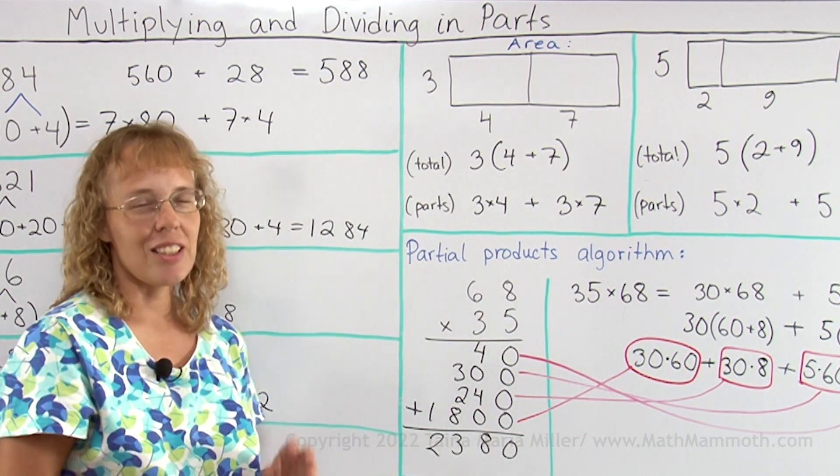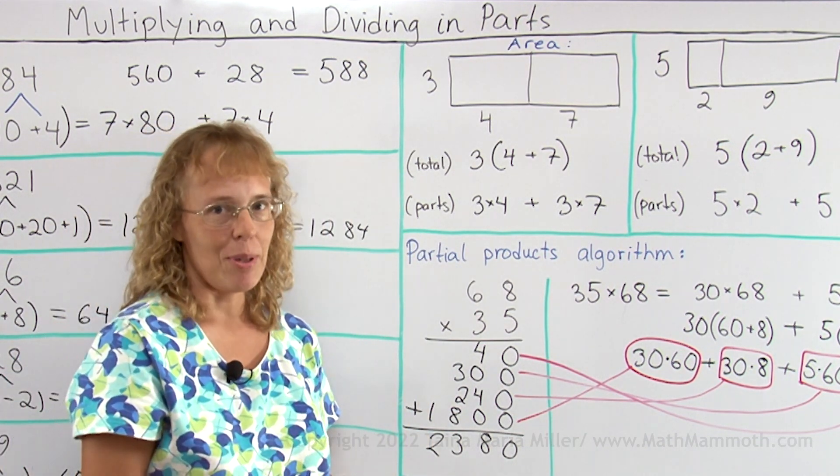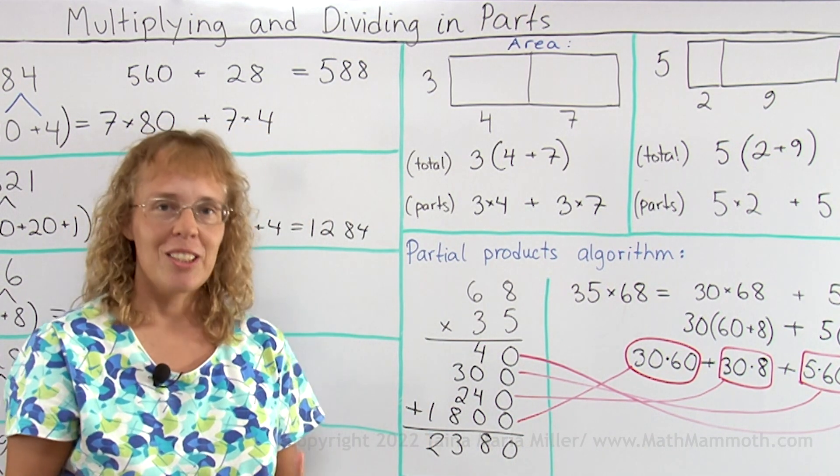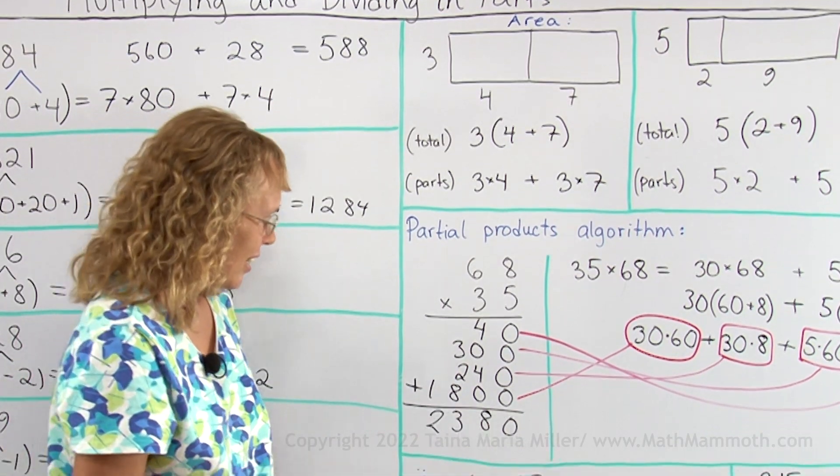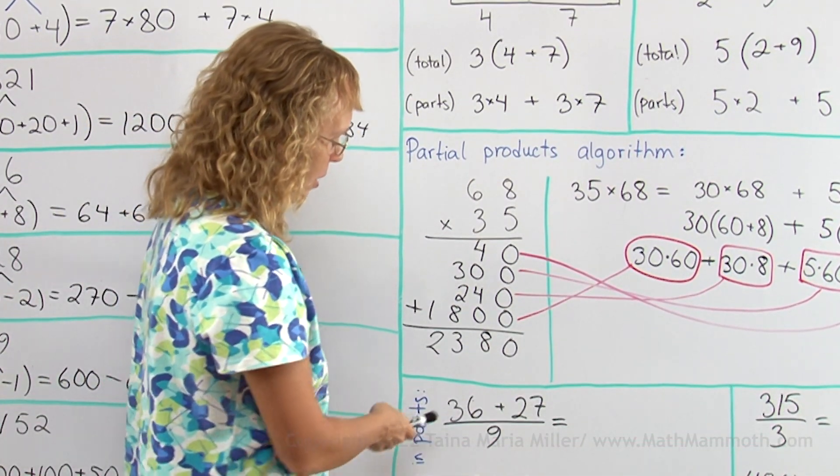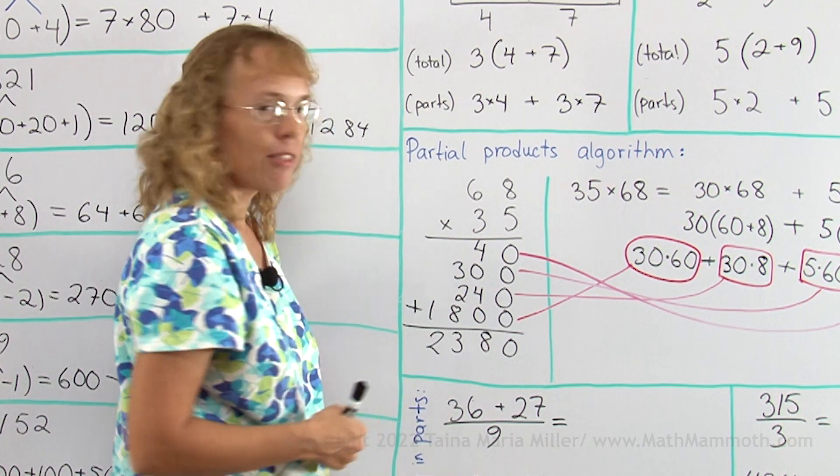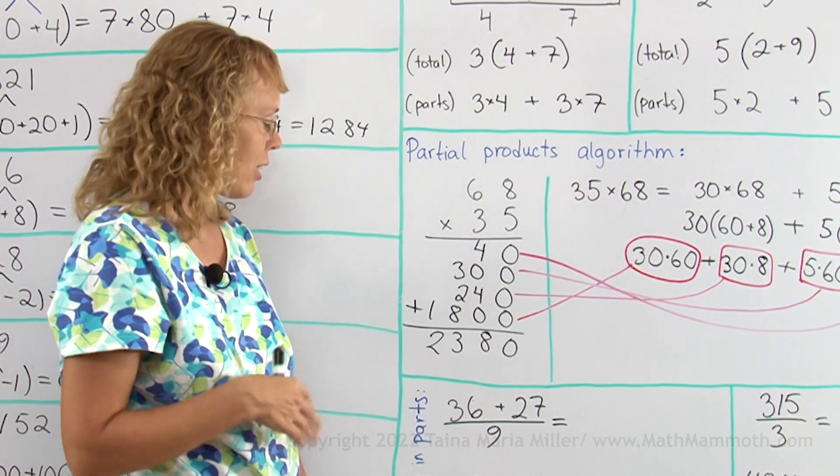Lastly, like the title says, we will look just a little bit about dividing in parts, which also is possible to do. Some examples: if I have 36 plus 27 divided by 9, I can actually divide in parts.